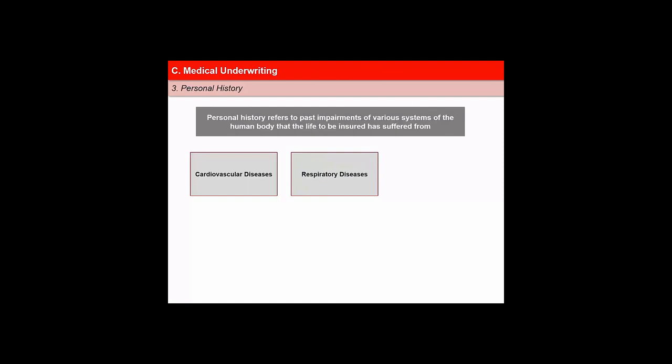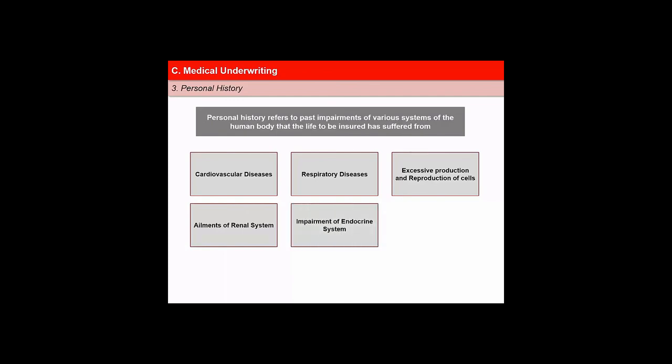Personal history refers to past impairments of various systems of the human body. The proposal form typically contains questions inquiring whether the life to be insured has been under treatment for any killing diseases. Major kinds of ailments include cardiovascular diseases, respiratory system diseases like tuberculosis, excessive production and reproduction of cells, ailments of the renal system including the kidney and urinary parts, impairments of the endocrine system like diabetes, diseases of the digestive system, and diseases of the nervous system.